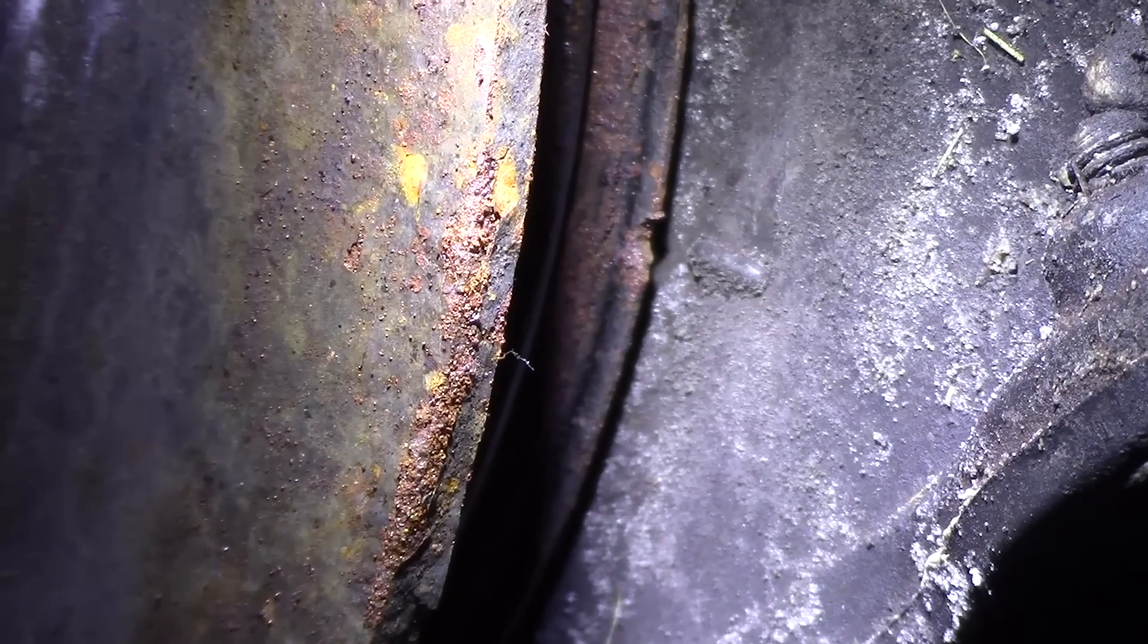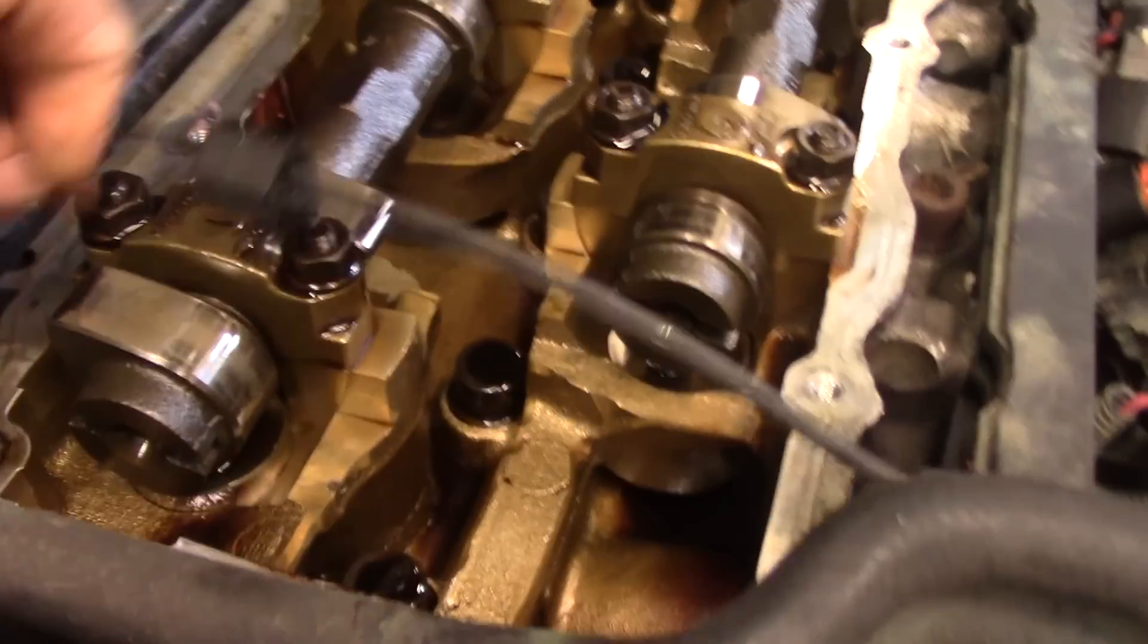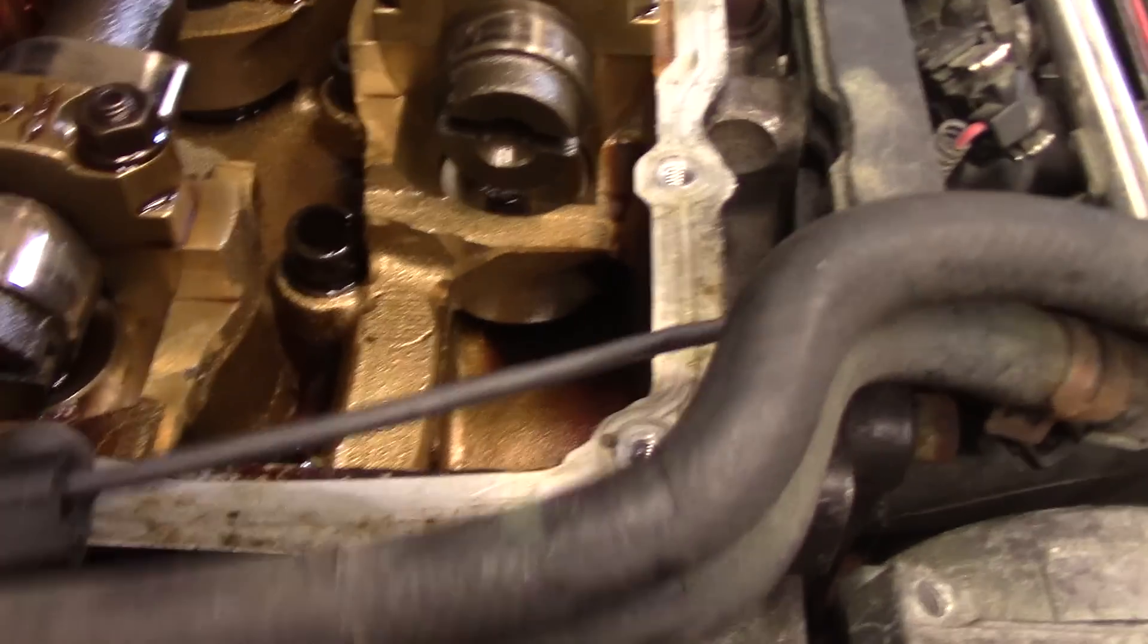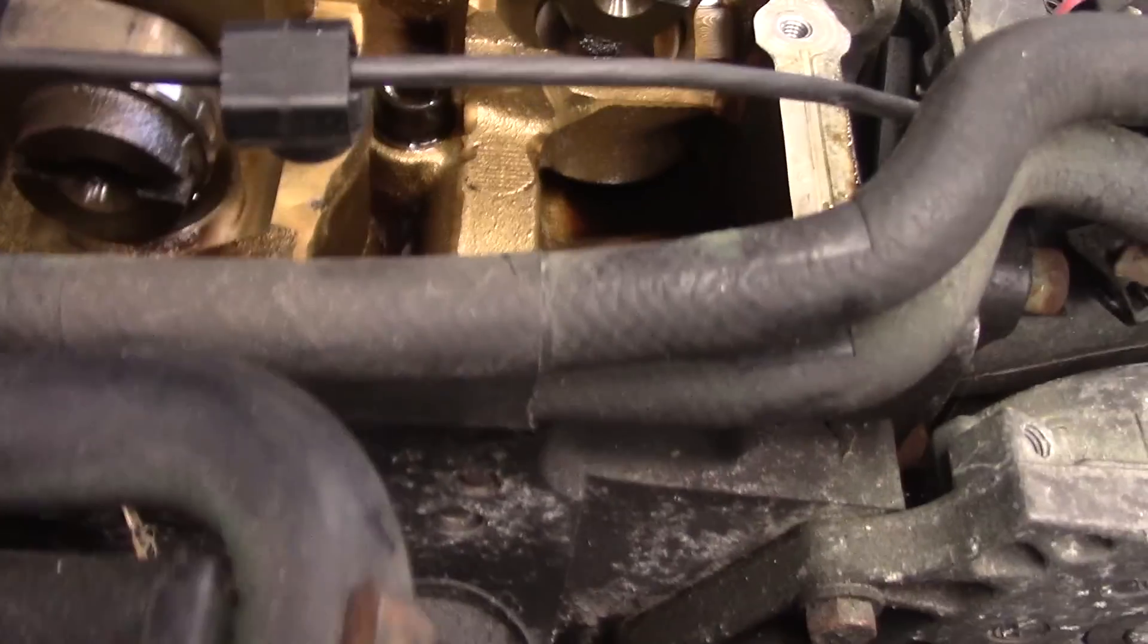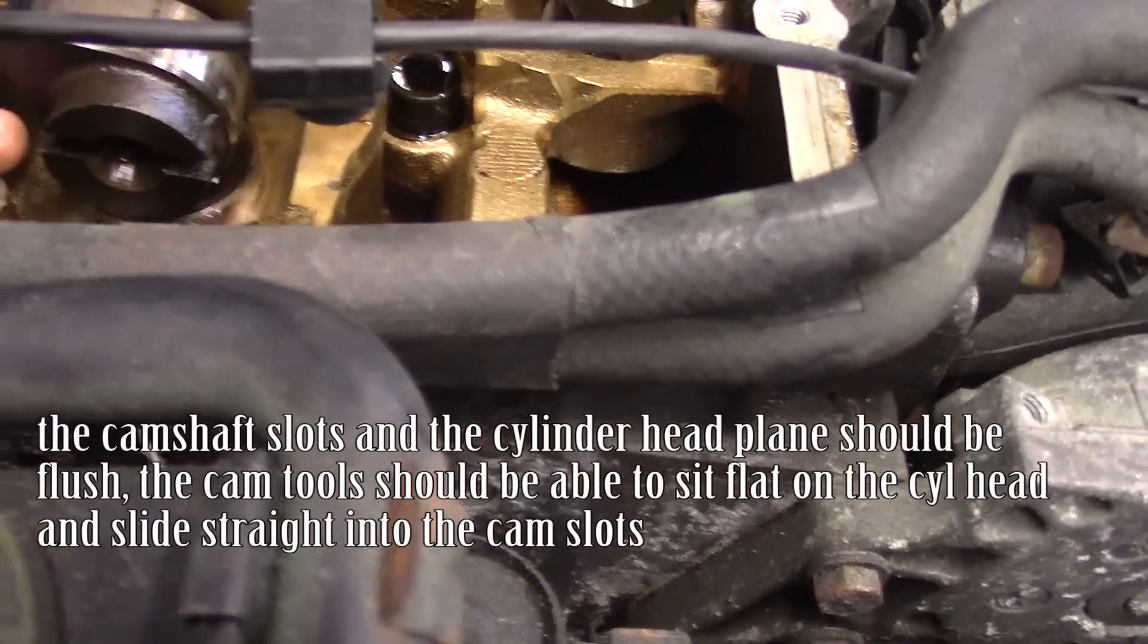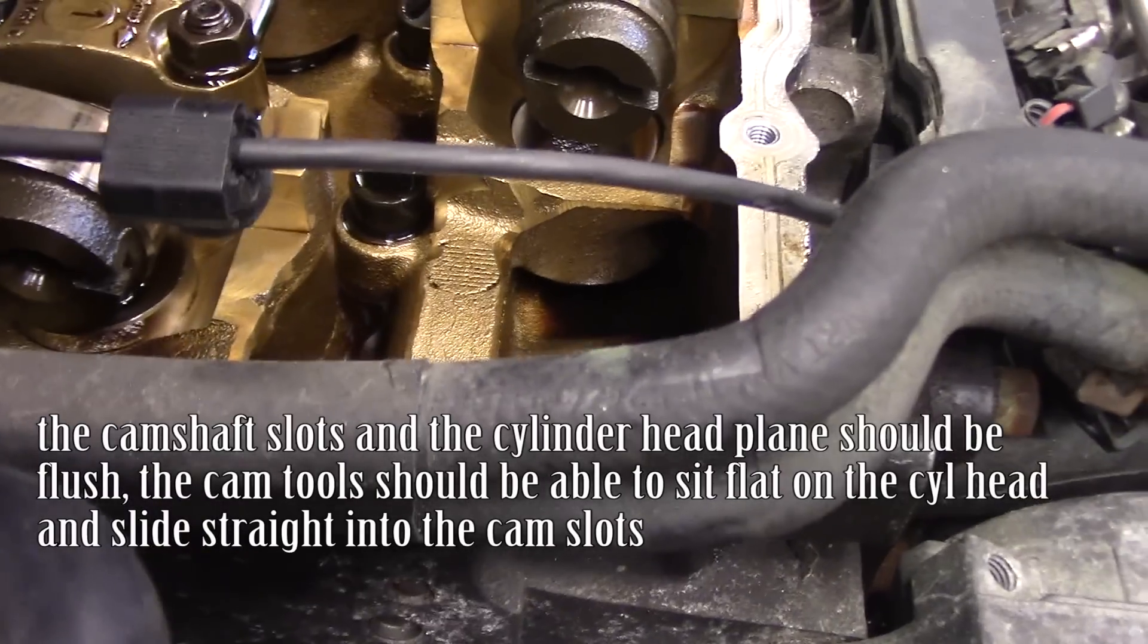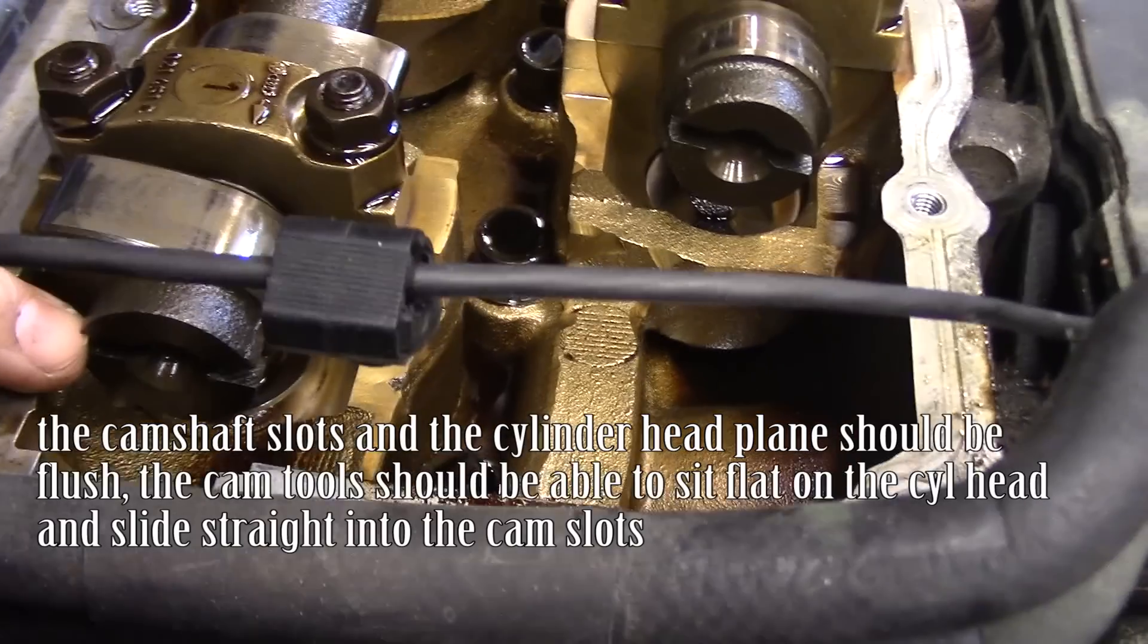Let me take you up to show you where our cams are. So here are our camshafts and with the crank at top dead center, there are special tools that should lay flat on top of this cylinder head and basically line up with the notches of these cams. So we know we're at top dead center because the cams are offset, these notches inside the end of the cams.